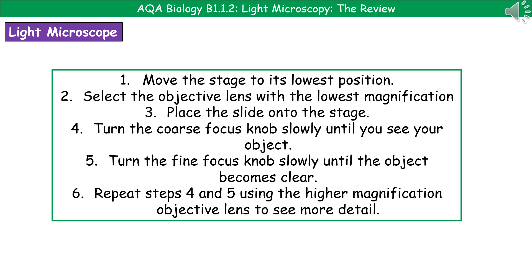When it comes to light microscopes, this is one of your required practicals, so you need to be able to describe how to carry out an experiment using a light microscope to observe something. First, lower the stage to its lowest position and select the objective lens with the lowest magnification. Then put your slide onto the stage and, looking through the eyepiece lens, turn the coarse focus knob slowly until you see your object come into focus. Then use the fine focus to slowly adjust it until it becomes perfectly clear.